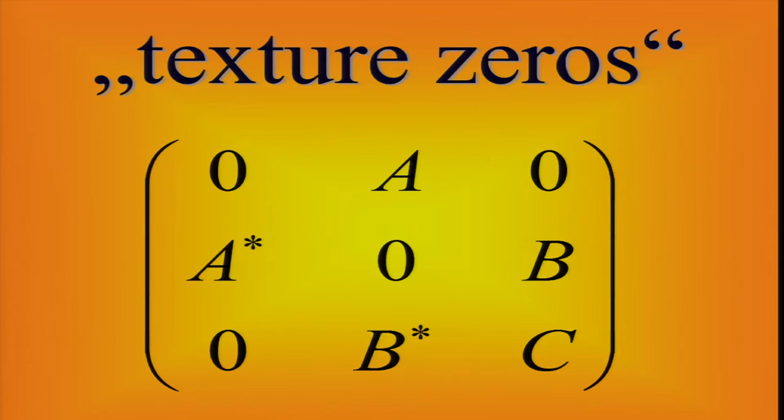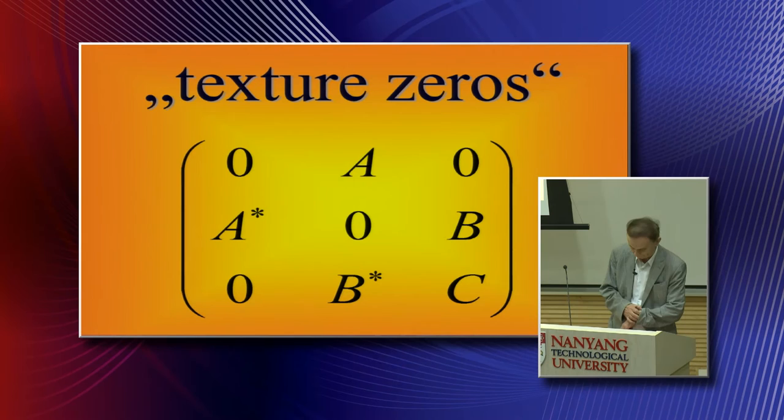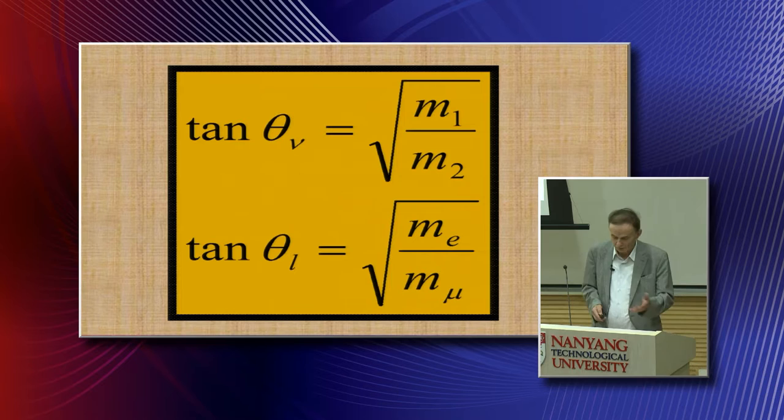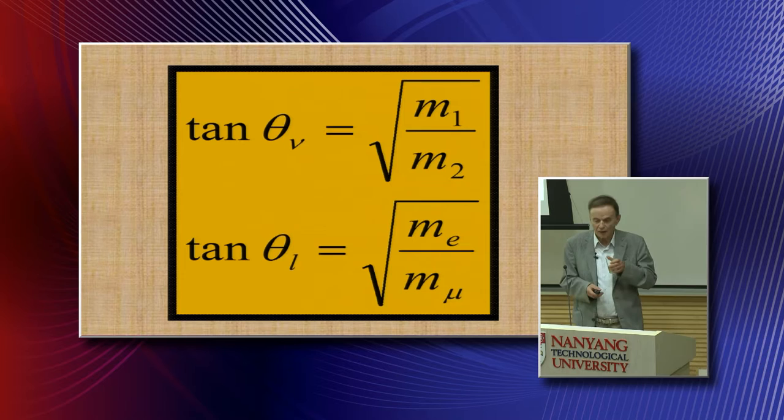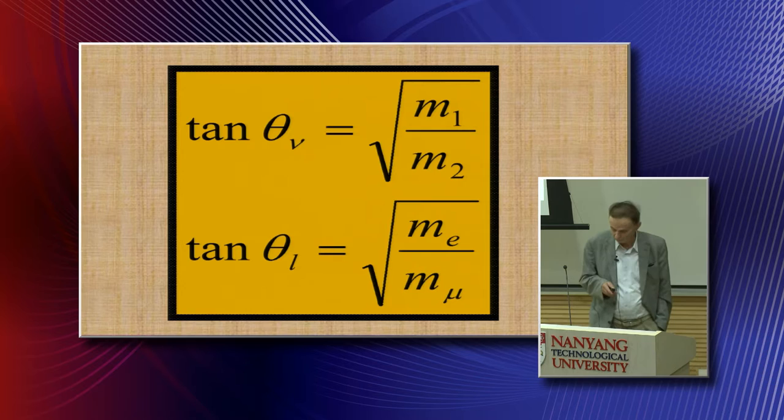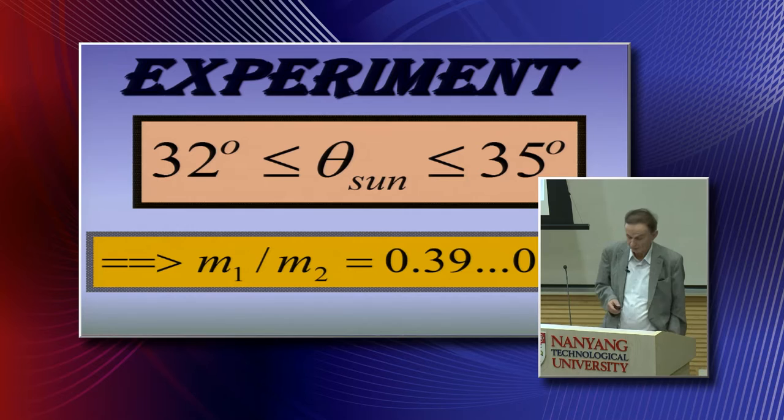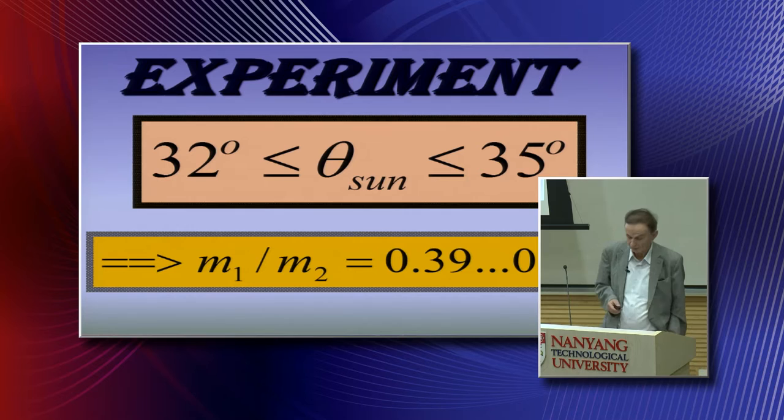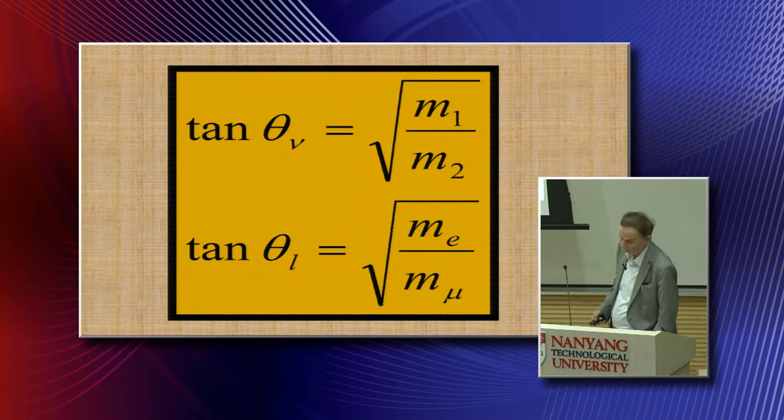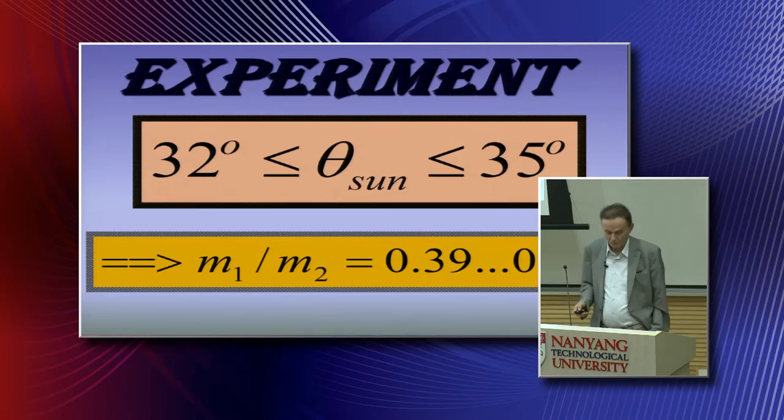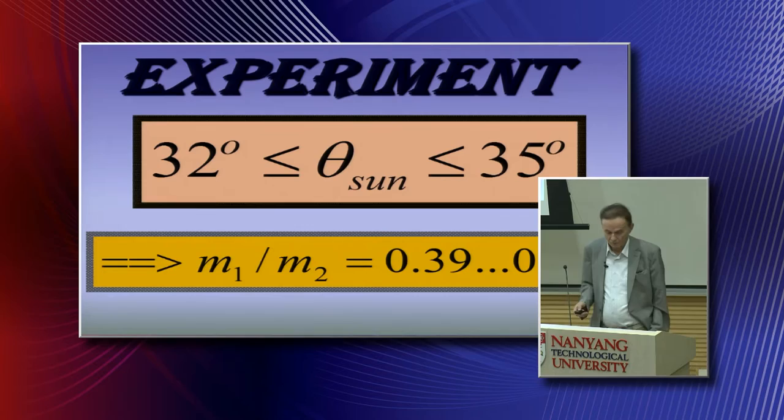So suppose there are, again, texture zeros in the mass. Well, in that case, you get similar relations as for the quarks, for the neutrinos. The solar angle, theta sub nu, is given by square root of M1 over M2. And theta sub L given by M_e over M_mu. Now, the solar angle has been measured. So here, like in the case of the quarks, we measure the quark masses. Here we measure the angle relatively well. Then we can calculate the square root of M1 over M2. And so you would find, then, from the data, M1 over M2 is about 0.4, between 0.4 and 0.5.